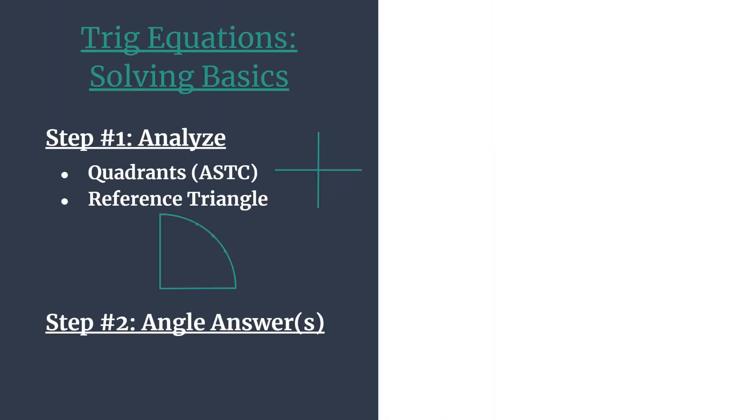Here's a quick outline. Two easy steps. The first step is all analysis. So you're going to find out which quadrants your angles should be in. And you'll also find your reference angle. So you'll work with your special right triangle. And then those two things together will help you determine your angle answers and how to state them correctly.